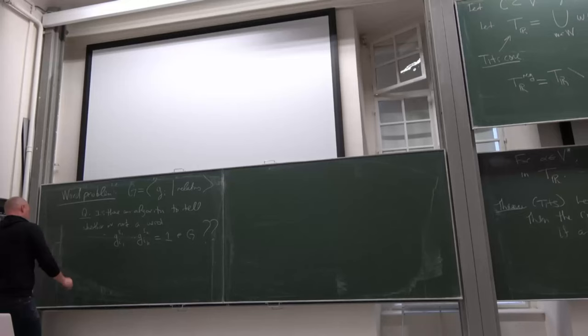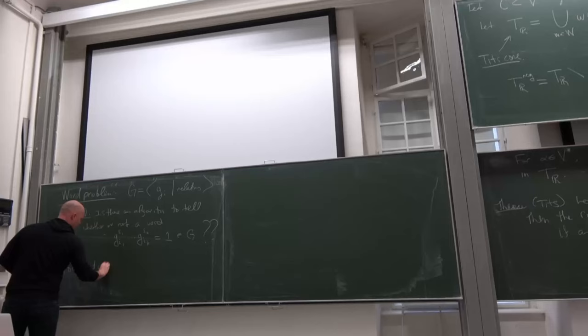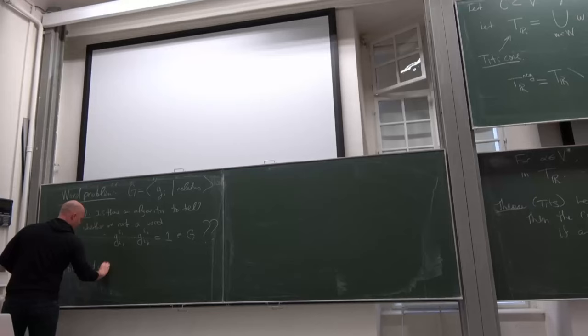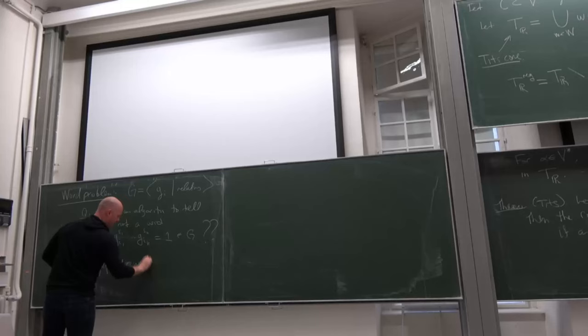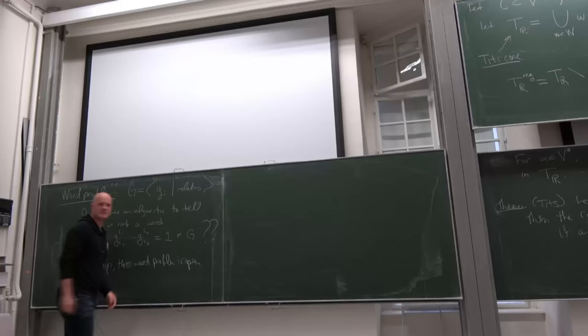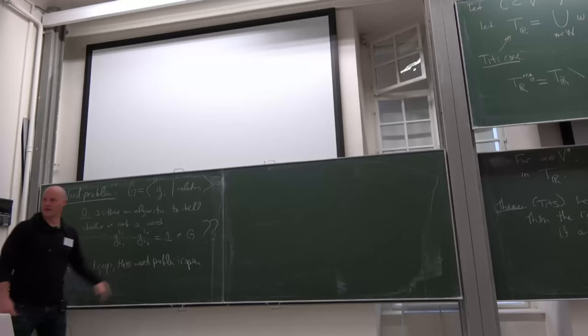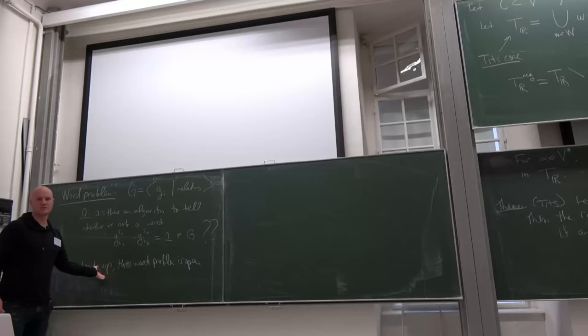I bring this up because this is the simplest example of a problem which is open for braid groups. For the braid groups associated to W, the word problem is open. In general — in specific cases like the type A braid group it's known — but in the generality we've presented here, certainly for braid groups associated with arbitrary Coxeter groups, this question is open. And this is an example of the sort of question which one should be able to solve via categorification.